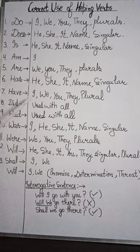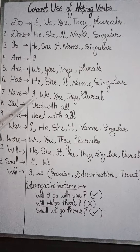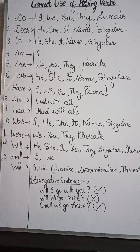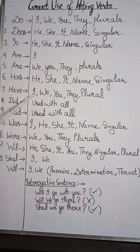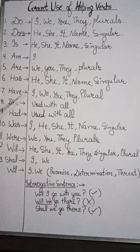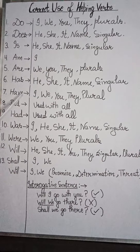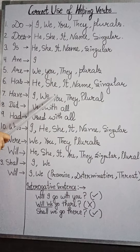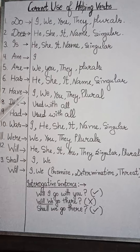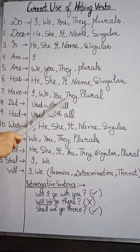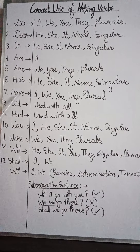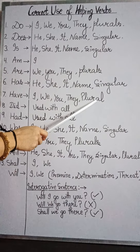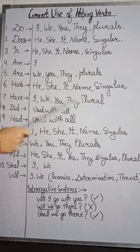'Have' जो है, 'I' के साथ हमेशा 'have' लगाते हैं — चाहे interrogative sentence बनाएं, affirmative बनाएं, या negative। 'I' के साथ हमेशा 'have' लगाएंगे। जैसे कि 'I have not taken my food,' 'we have watched this movie,' 'you haven't prepared your assignment,' 'they have not invited us।' Plurals के साथ भी 'have' लगेगा जैसे 'toys have been broken by them।'